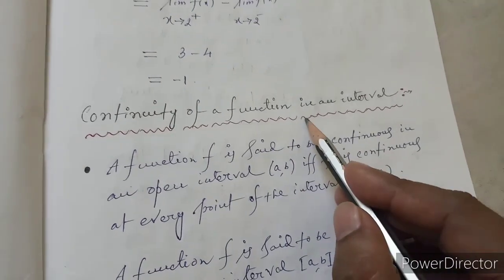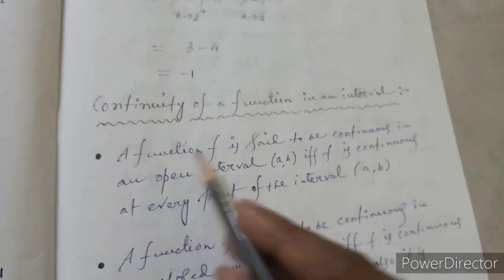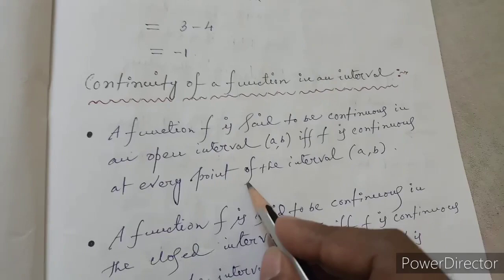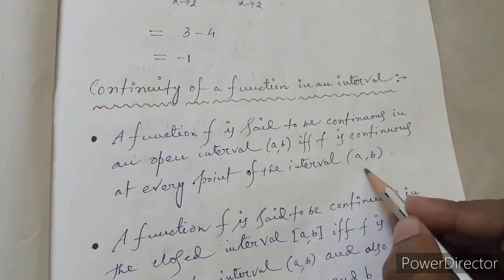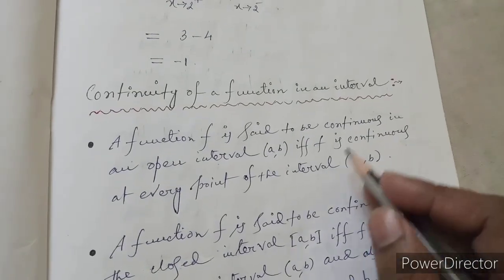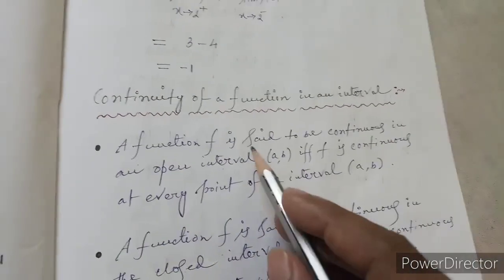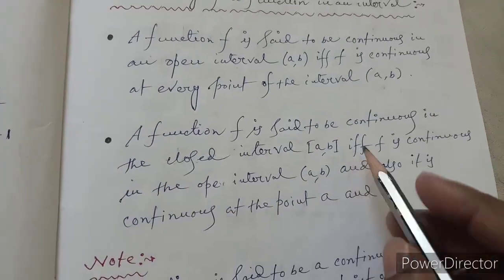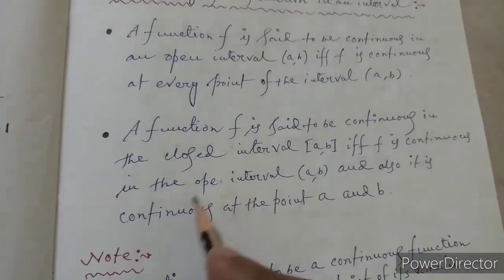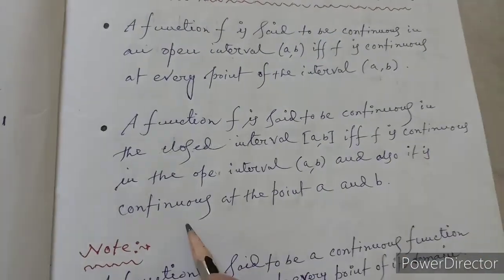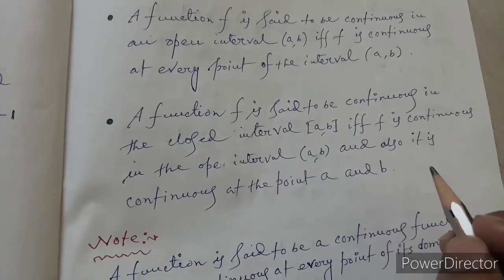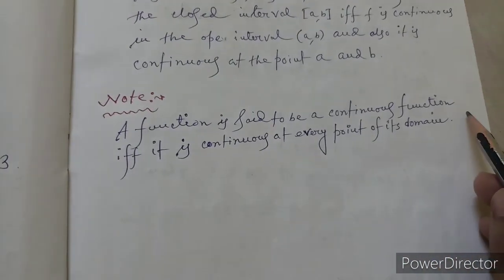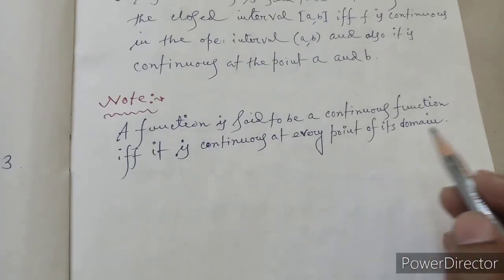Next topic: continuity of a function in an interval. A function f is said to be continuous in an open interval (a, b) if f is continuous at every point of the open interval (a, b). A function f is said to be continuous in the closed interval [a, b] if it is continuous in the open interval (a, b) and also continuous at the endpoints a and b. Note: a function is said to be a continuous function if it is continuous at every point of its domain.